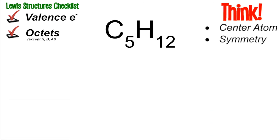The first problem is C5H12. On every screen you'll see a checklist in the upper left: does your picture have the right number of valence electrons, and does every atom except H, B, and Al have an octet? Reminder: H can only have two electrons, so just a single bond line, and B and Al both have three valence electrons, allowing only six electrons total.